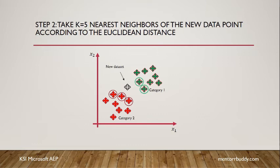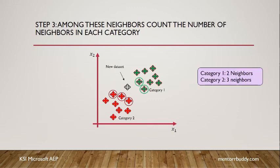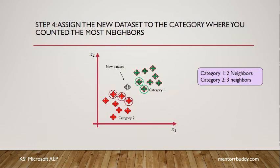KNN calculates the Euclidean distance for all data points but takes only the five nearest ones. Among these five neighbors, we count how many are in each category — in this example, two in category one and three in category two. Step four: we assign the new data point to category two since it has the most neighbors, making it a red-colored point.